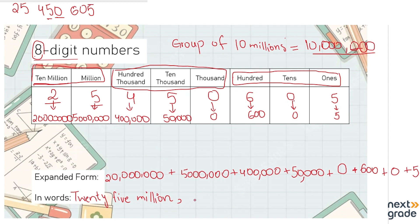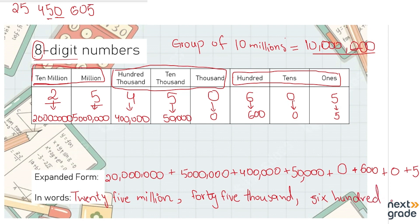Next we are going to write the other numbers together. The next three place values give us forty-five thousand. Then the last three place values will be written together — we have no value at tens, so we don't mention that — giving us six hundred and five. So this is how we write the number in the form of words.